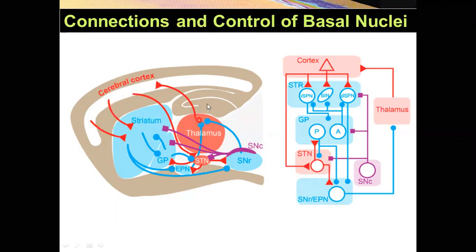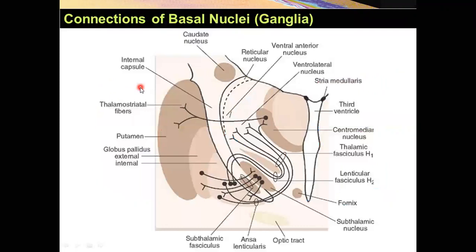But let's look at the structures and identify them before we talk about the connections among them. Here is the putamen. This is the external globus pallidus. Here is the internal globus pallidus. This is the subthalamic nucleus. Here is the thalamus. Third ventricle, thalamus.